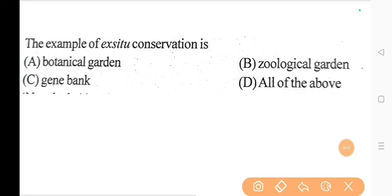First question, the example of ex-situ conservation is? Option D, all of the above: botanical garden, zoological garden, and gene bank.